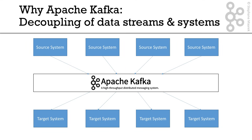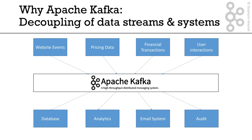And so this decoupling is what is so good about Apache Kafka. For example, what do we have in Kafka? You can have any data stream you can think about — it could be website events, pricing data, financial transactions, user interactions, and many more. Additionally, once the data is in Kafka, you may want to put it into any system you like, such as a database, your analytics systems, your email system, or your audit.